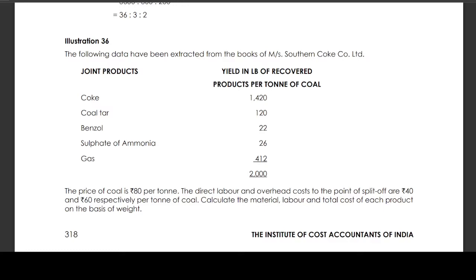Registration 36. The following data have been extracted from the books of Ms. Southern Coke Limited. Joint products: Coke, coal, tar, benzoyl, sulphate of ammonia, gas. Yield in lbs of recovered products per ton of coal.